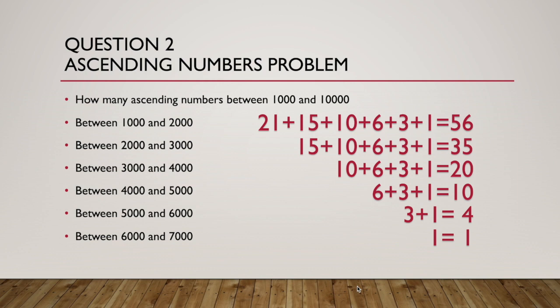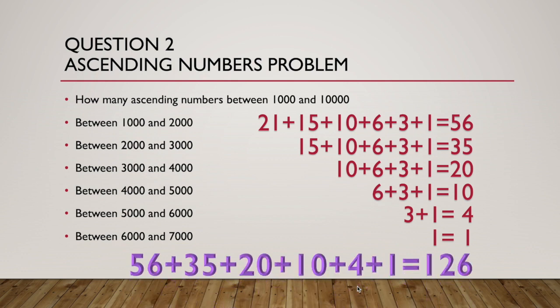There are no solutions bigger than 7,000. You can't start a number with 7, then have three digits that are bigger than 7. It's impossible. So, all together, when we add that up, we have that sum, which gives us 126 numbers.